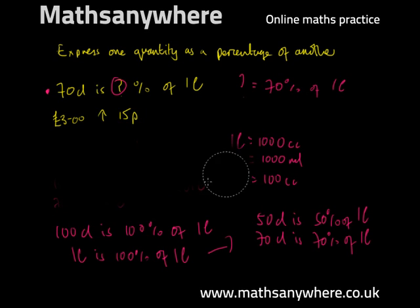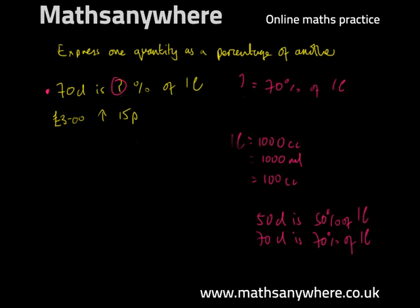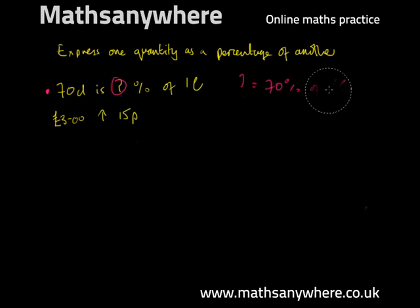Our second example, slightly different type of question. We're increasing 3 pounds by 15 pence. Again, we have to get our units equivalent. We could either make the pounds into pence or the pence into pounds. We'll use a different color this time. Green. We need to know that 1 pound equals 100 pence. Let's work with pence in this case. We'll convert our 3 pounds to pence.